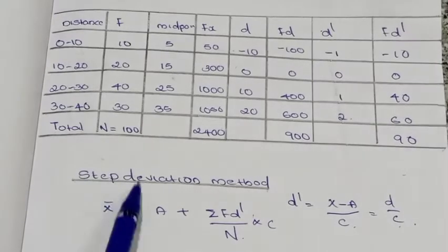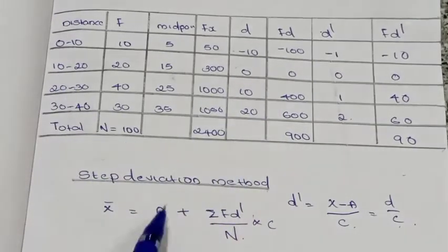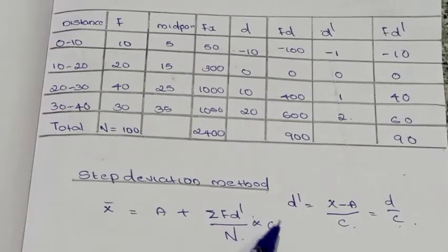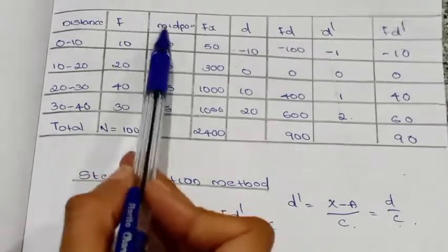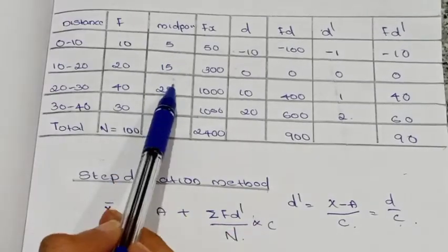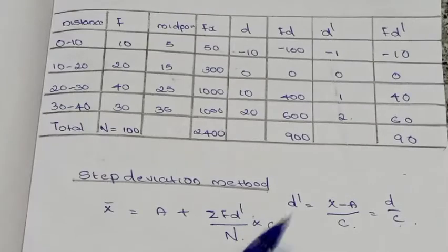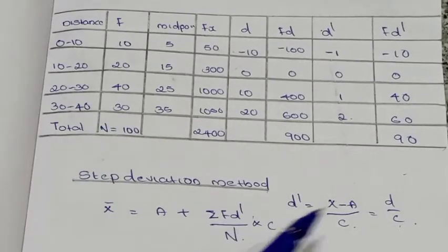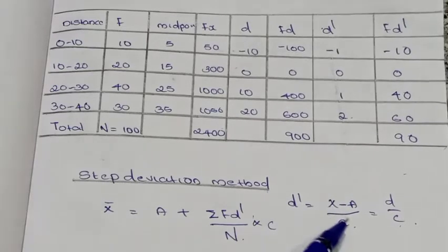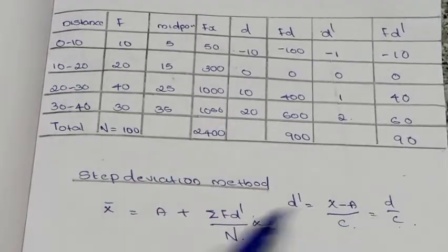Next is the Step Deviation Method. The equation is: x̄ equals A plus sigma fd' divided by n, multiplied by c, where c is the common factor. Here c equals 10, which is the class interval width. d' equals x minus A divided by c, where x minus A equals d, so d' equals d divided by c, and c equals 10.